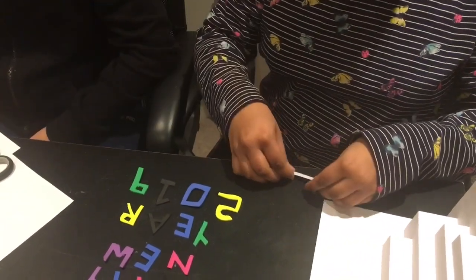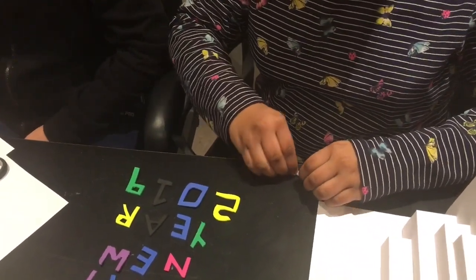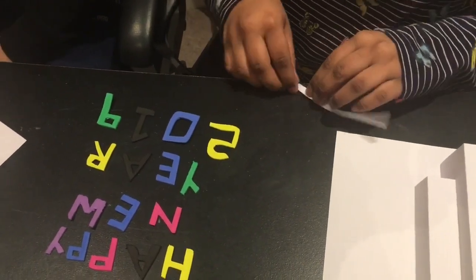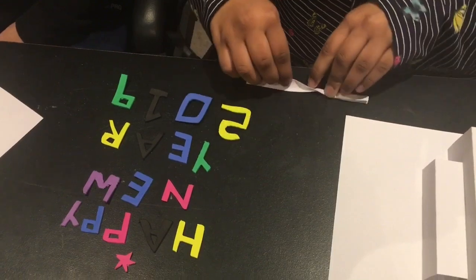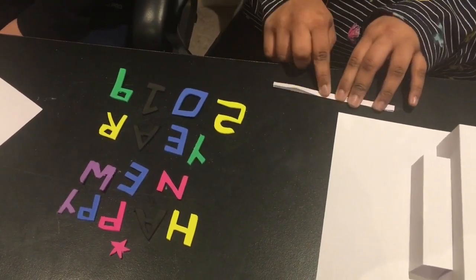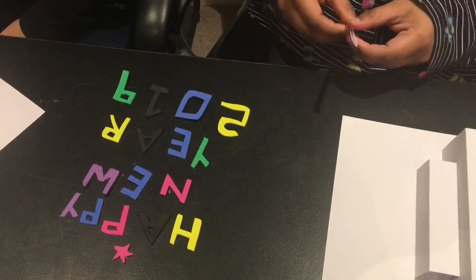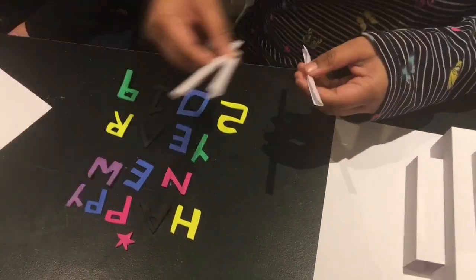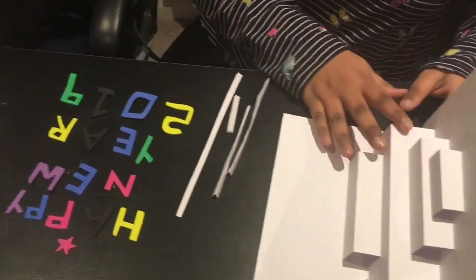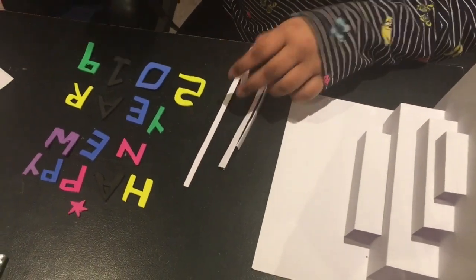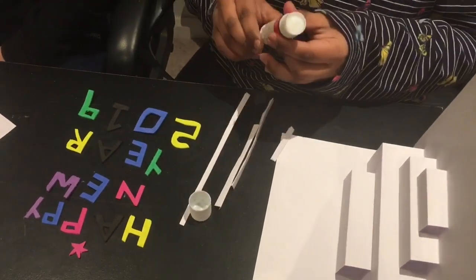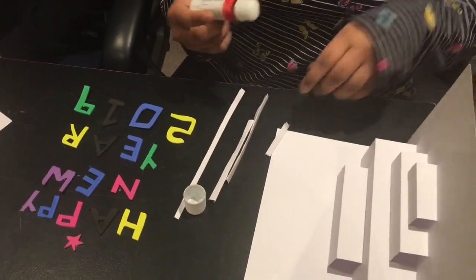And then fold it in half vertically to place them on my card. Now I am going to take my first one and glue it onto my first step.